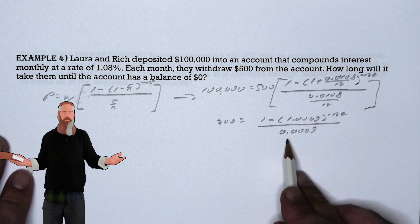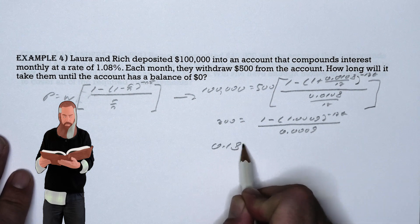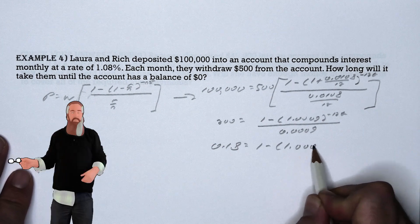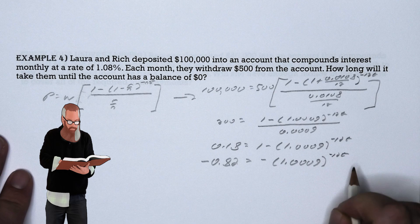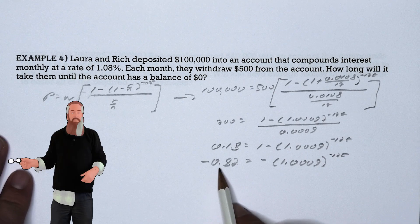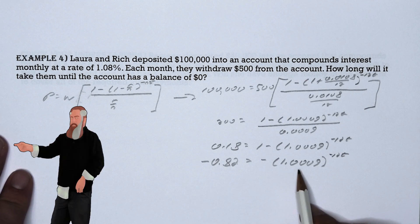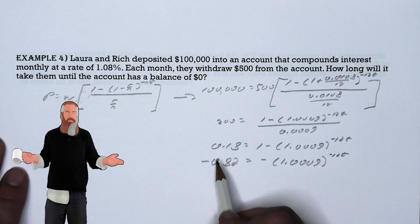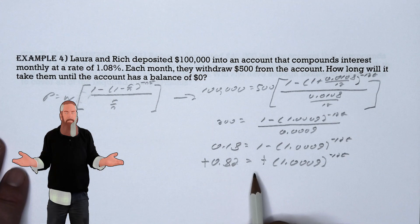We can substitute that in and do a little bit of easy calculation. Multiplying both sides by 0.0009 we get 0.18 is equal to 1 minus 1.0009 to the negative 12t power. We then subtract 1 from both sides to get negative 0.82 is equal to negative 1 times 1.0009 to the negative 12t power. Let's clean this up by multiplying both sides by negative 1 so we can have positive symbols.